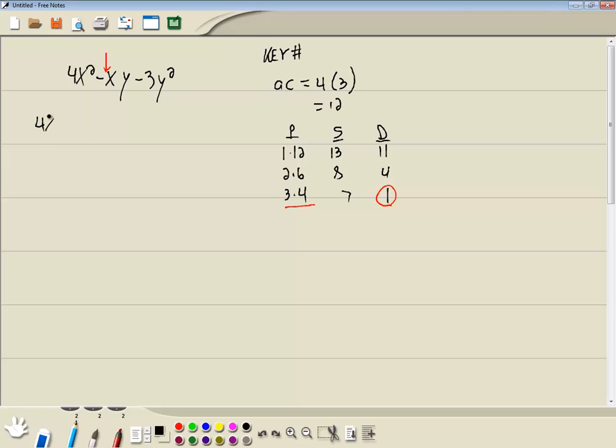Now remember the key number, we rewrite our middle term using those two numbers. Our larger number in the P column that we're using, we're using 3 and 4, so the larger one is 4, will always be the same sign as the middle term, which in this problem is negative. So we're going to have negative 4xy.